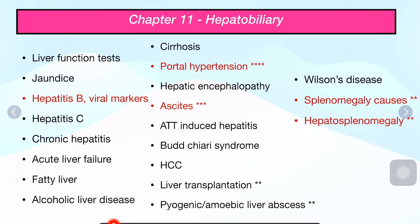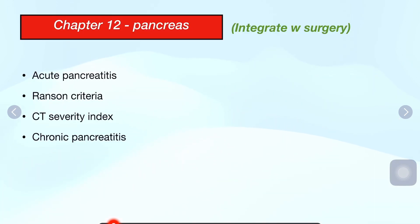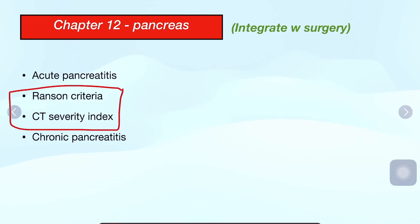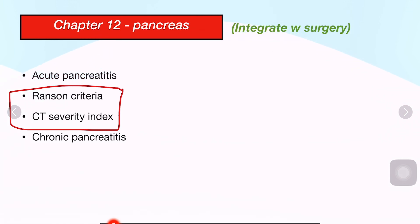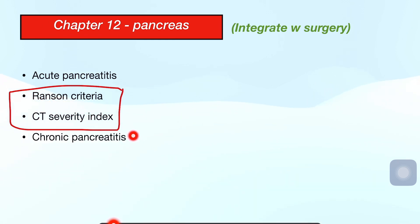Then comes Pancreas — you can integrate it with surgery, or just study it with surgery. The key medicine content is the Ranson's criteria and CT Severity Index. For acute pancreatitis causes, there is a mnemonic given in surgery. Don't just say alcohol — you have to say other causes too. Ranson's criteria and severity scoring can appear as practical or theory questions.